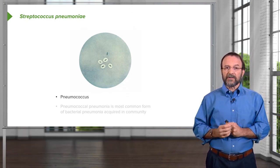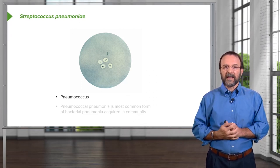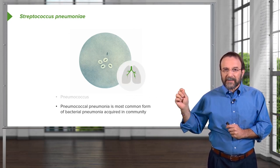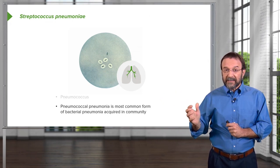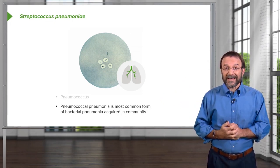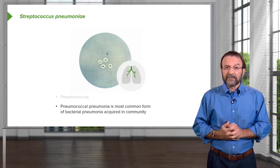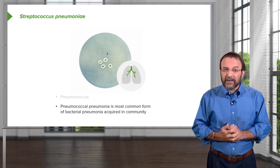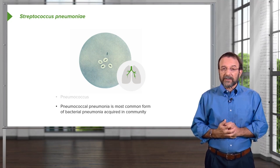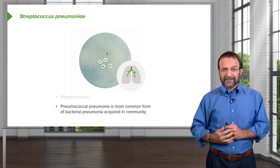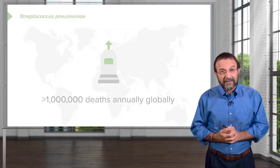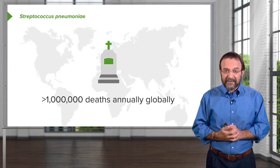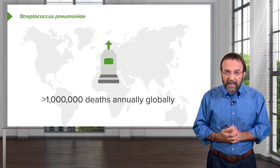Another important streptococcus is Streptococcus pneumoniae, the pneumococcus — usually cocci in pairs. This organism is famous in research for being used to show that DNA is the genetic material in the 1940s. Clinically, it is the most common causative agent of community-acquired bacterial pneumonia, responsible for over a million deaths every year throughout the world. 'Community-acquired' means you get it out in the community, as opposed to hospital-acquired.